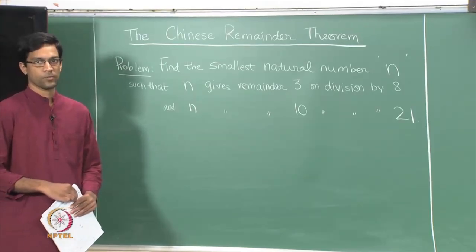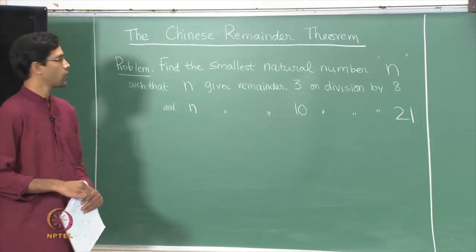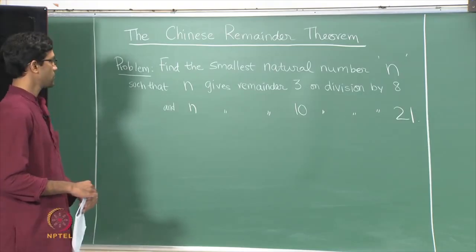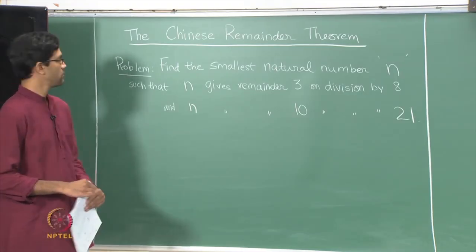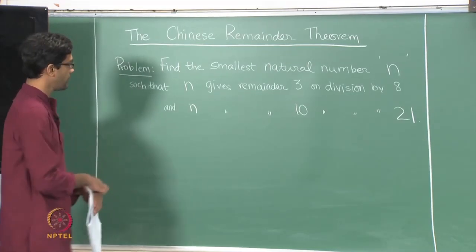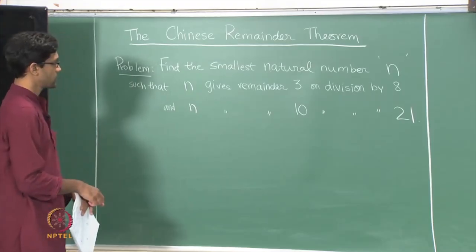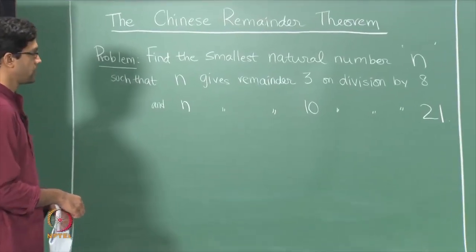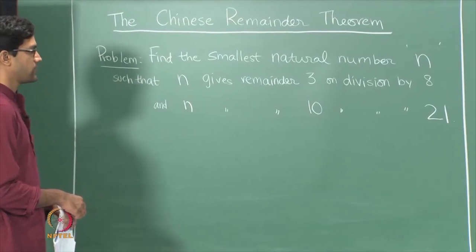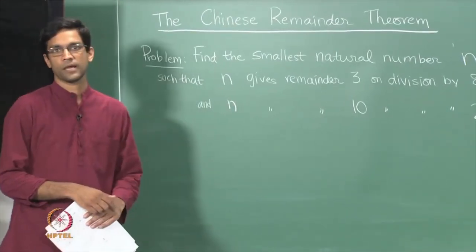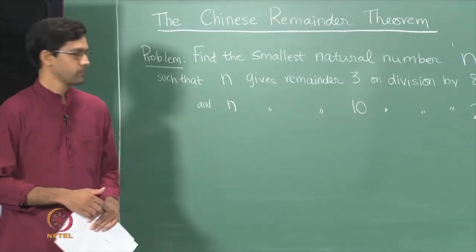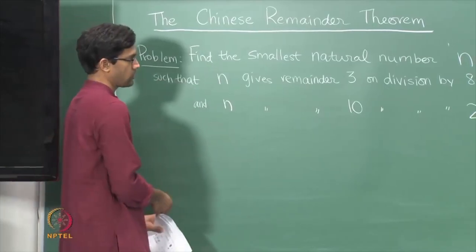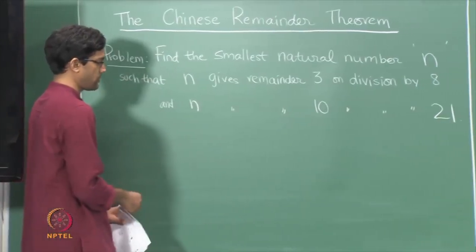Today we will talk about what is called the Chinese Remainder Theorem. The typical problem is the following: find the smallest natural number n such that n gives a remainder of 3 when divided by 8, and gives a remainder of 10 on division by 21. Let us try and see what we would do to solve a problem like this.